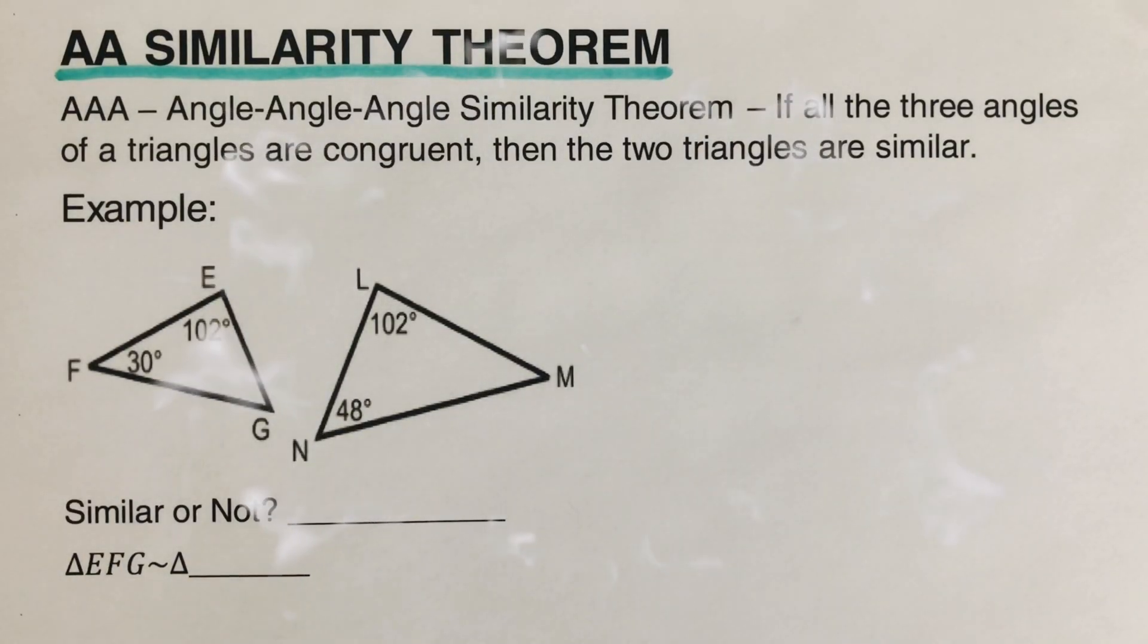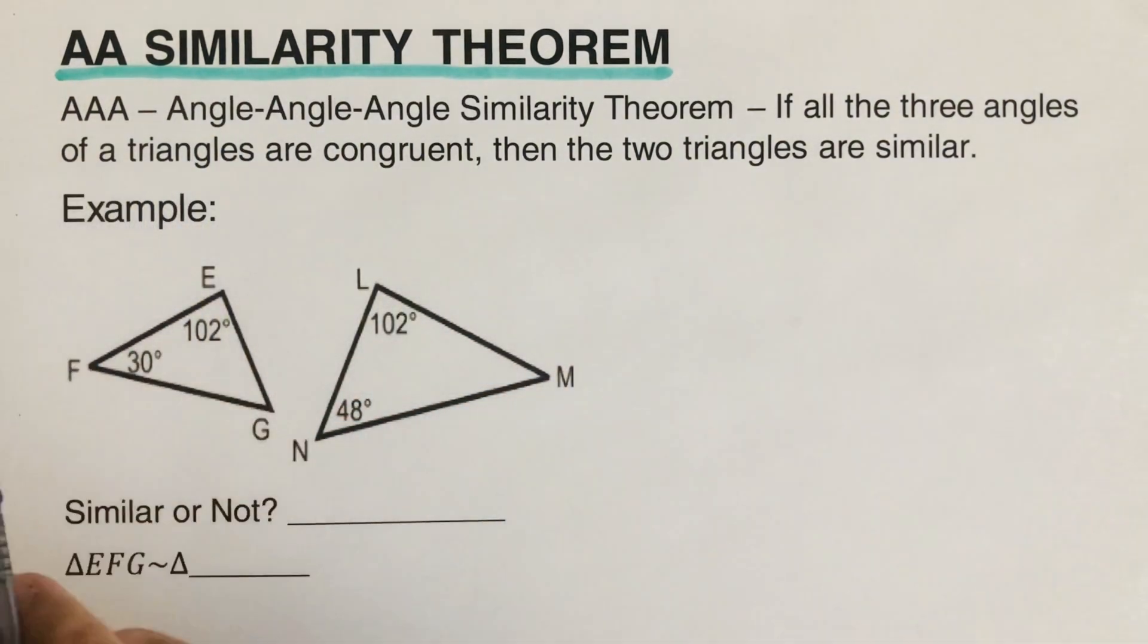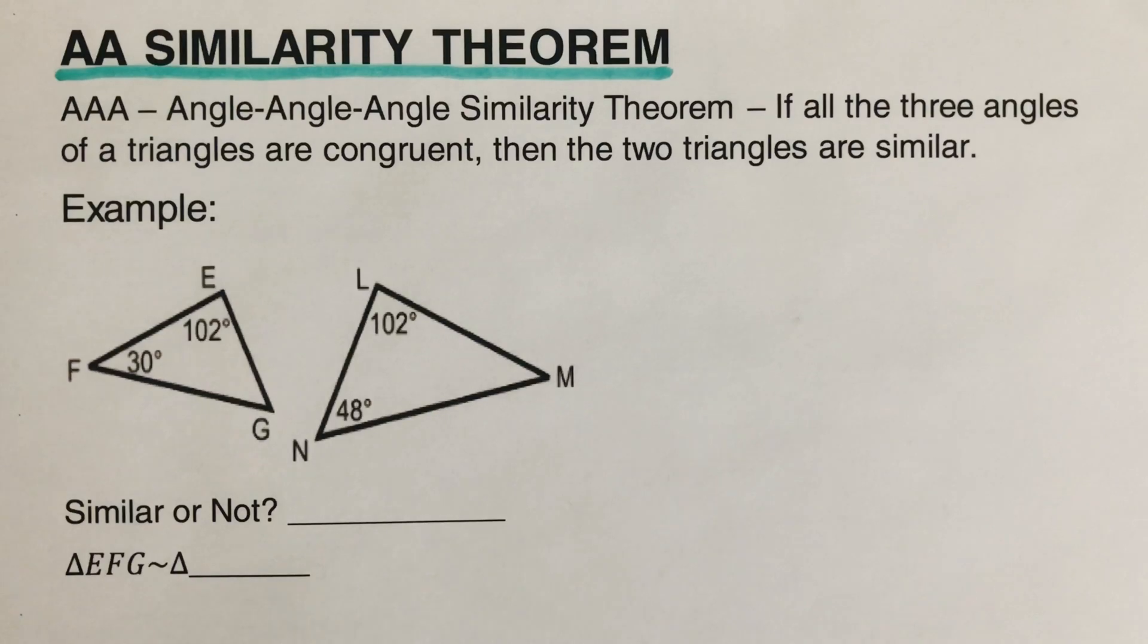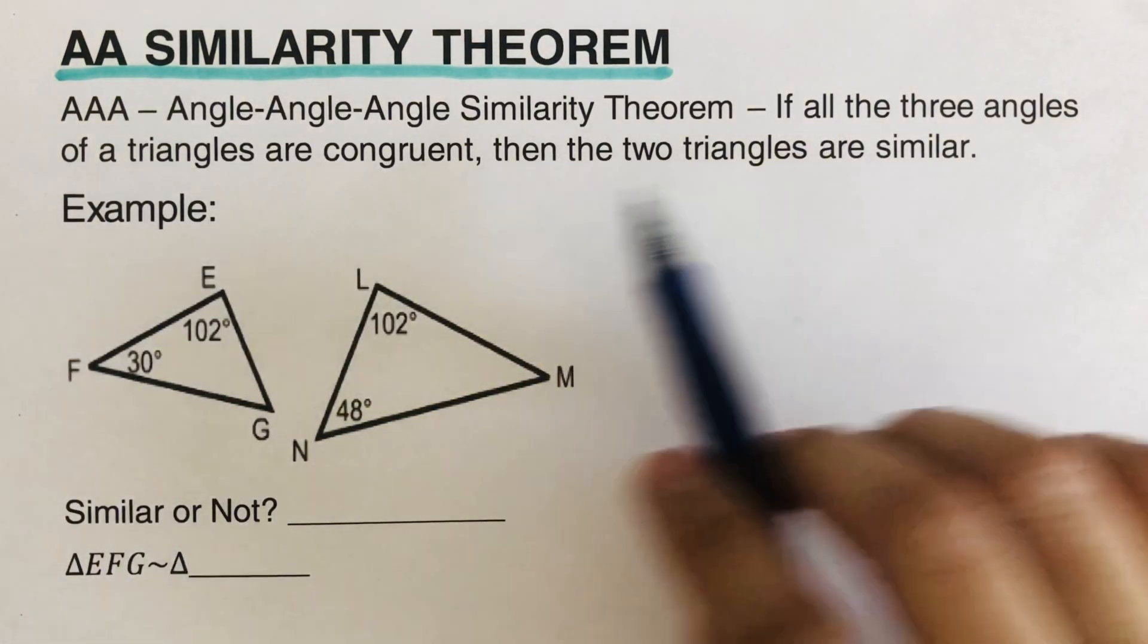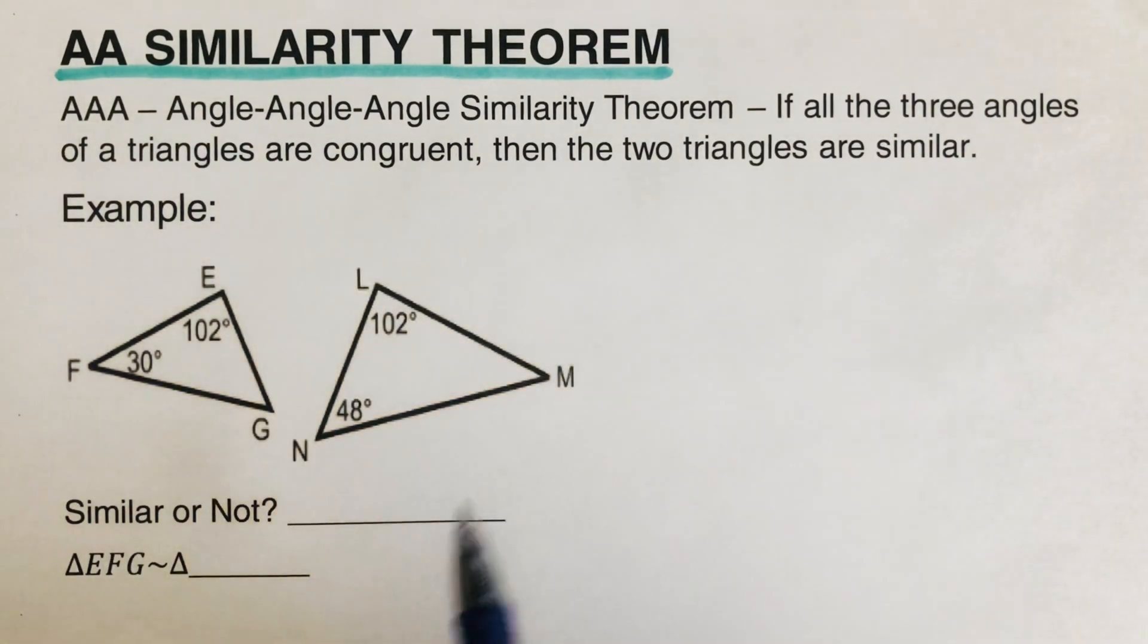Hello everyone! Today we're going to have the AA Similarity Theorem. Other textbooks are using AAA, they're just pretty much the same thing. So AA or AAA Similarity Theorem states that if all the three angles of a triangle are congruent, then the two triangles are similar.